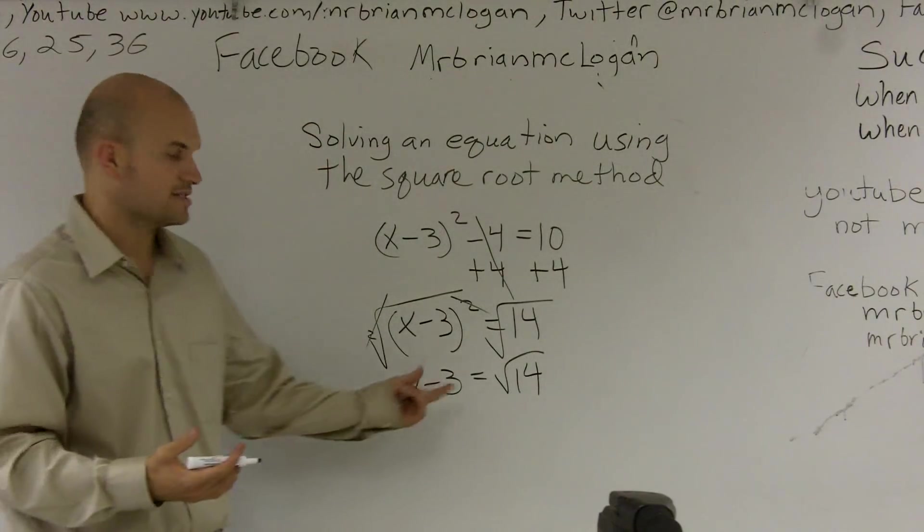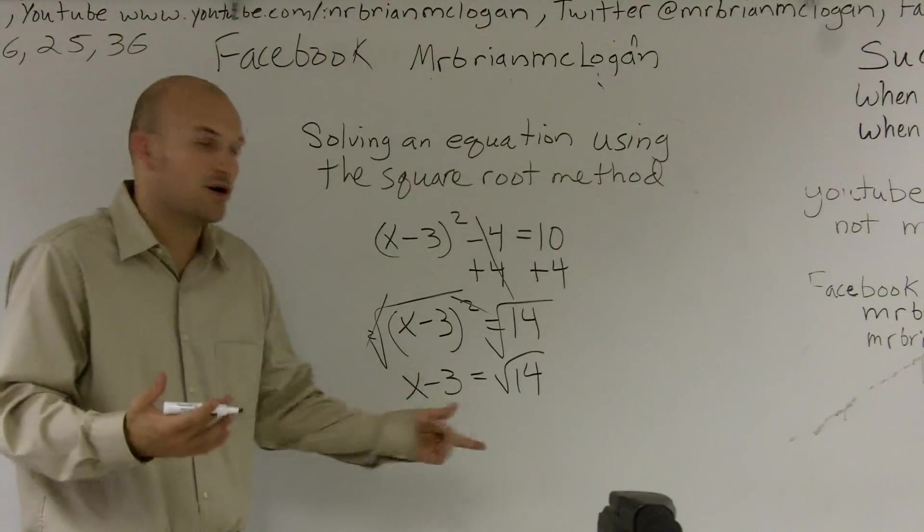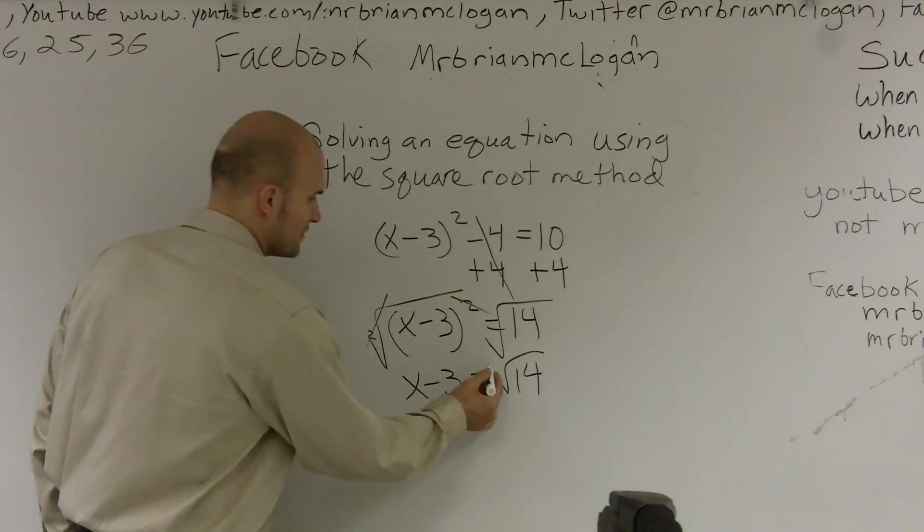And whenever we're taking the square root of a number, that's always going to be plus or minus. We don't know if it's going to be the positive or the negative version.